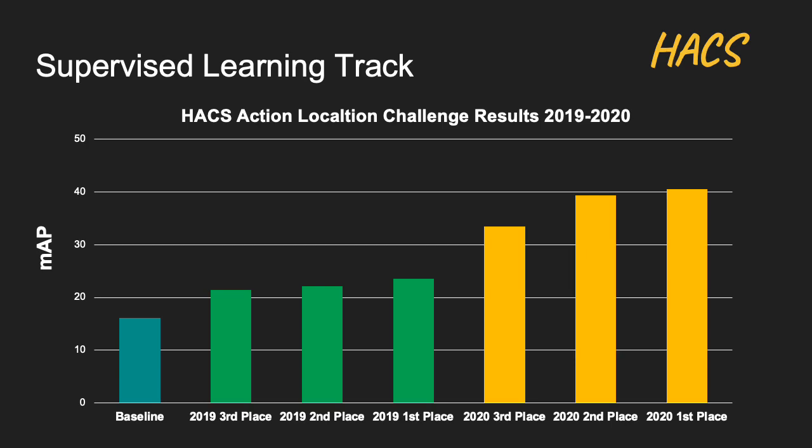In the 2019 HACS Challenge, the top performing models — the green bars in the chart — achieved around 20 mean AP. And this year, the yellow bars show a huge boost from last year's performance, with the best models reaching around 40 mean AP.